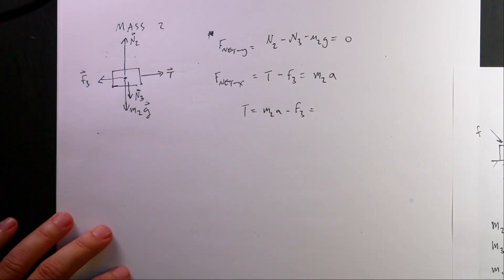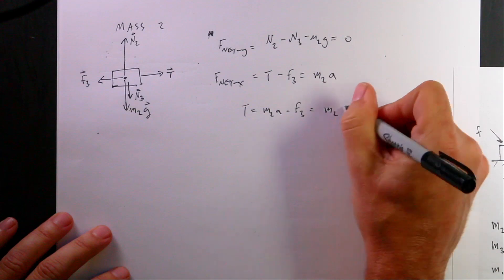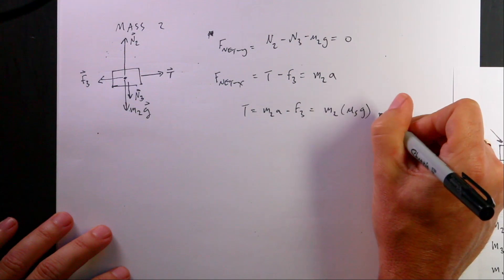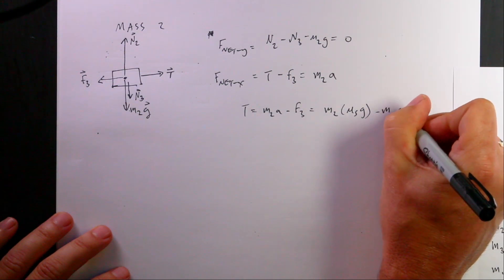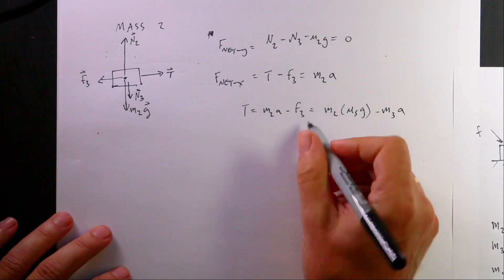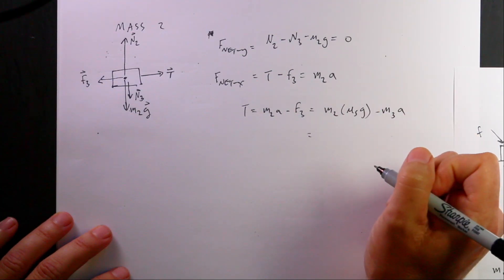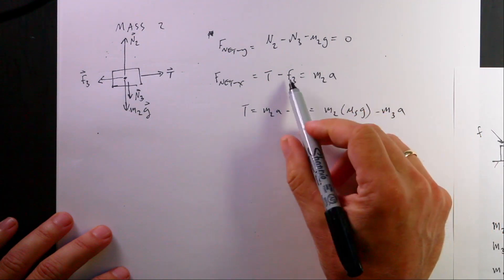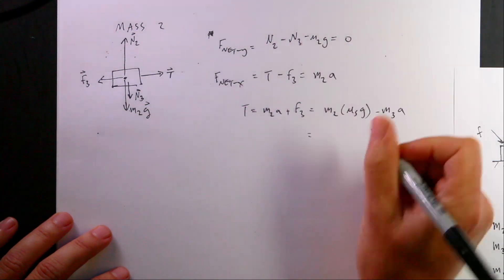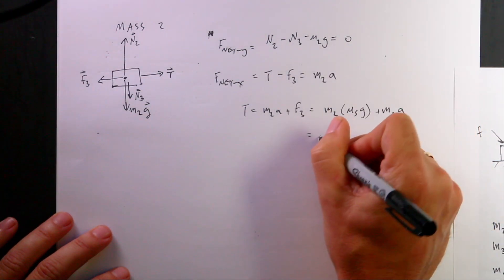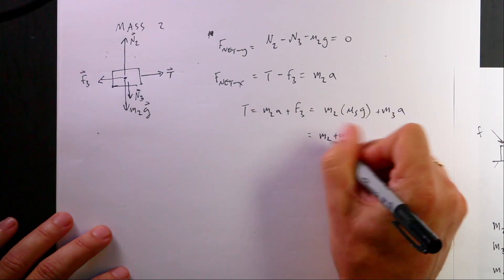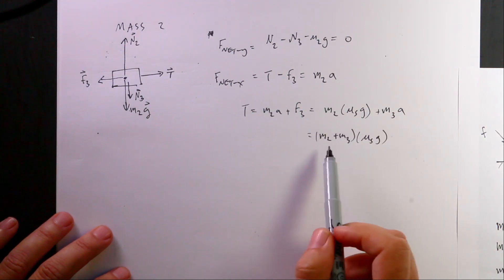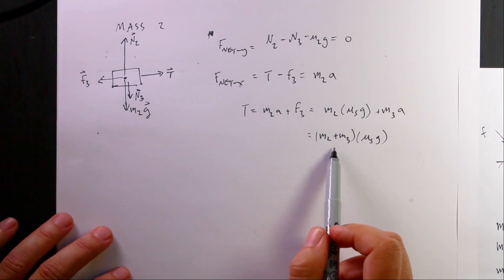Substituting a equals mu_s times g and F3 equals M3a equals M3 times mu_s times g, I get T equals M2 times mu_s times g plus M3 times mu_s times g, which simplifies to T equals (M2 plus M3) times mu_s times g. This confirms the intuition that you could treat M2 and M3 as a single combined mass.